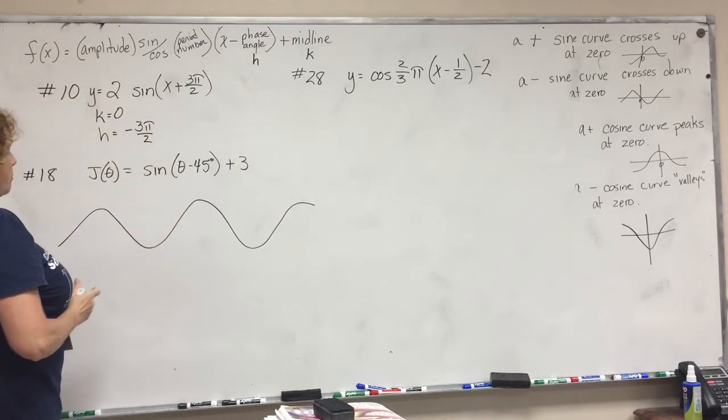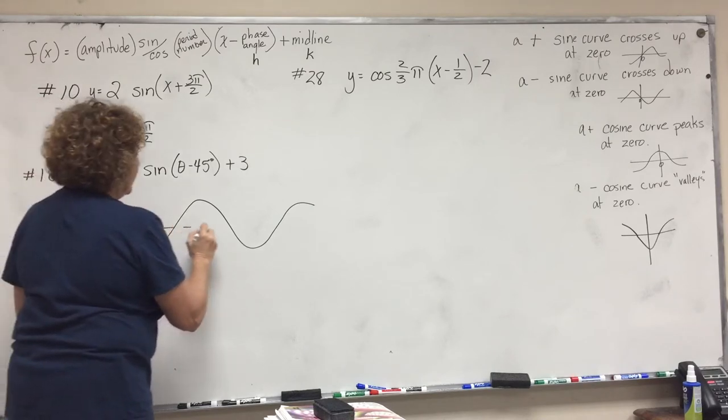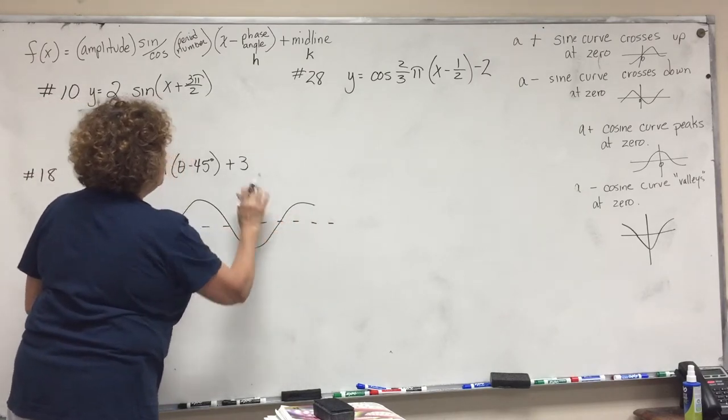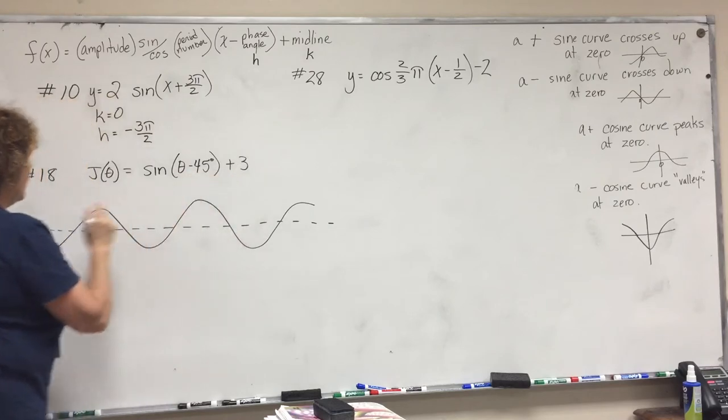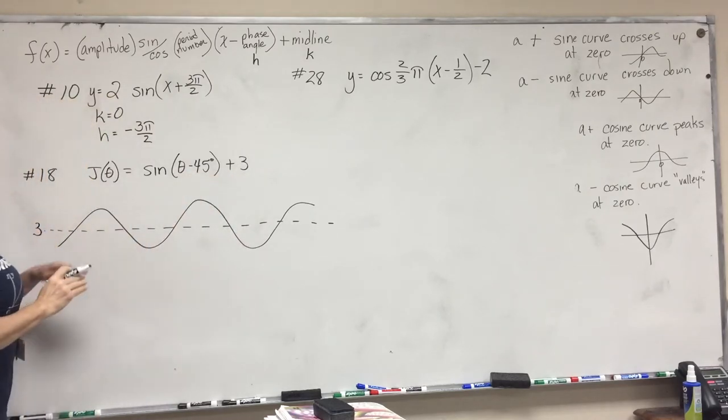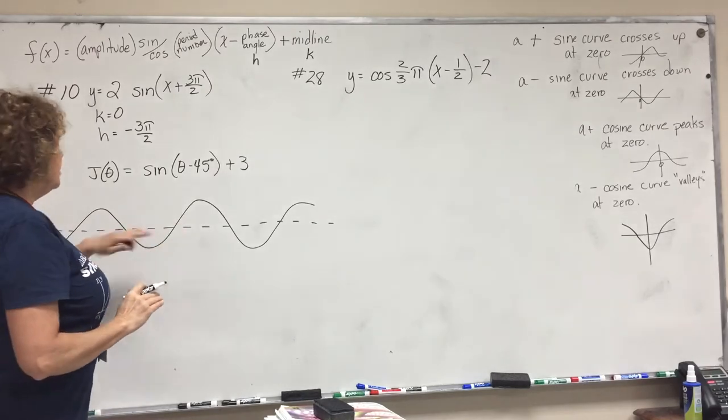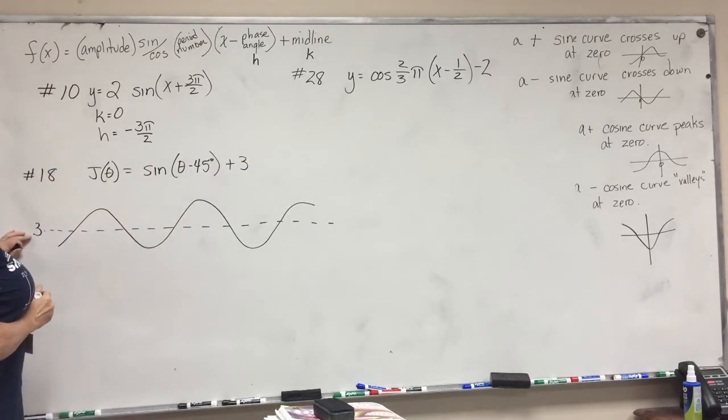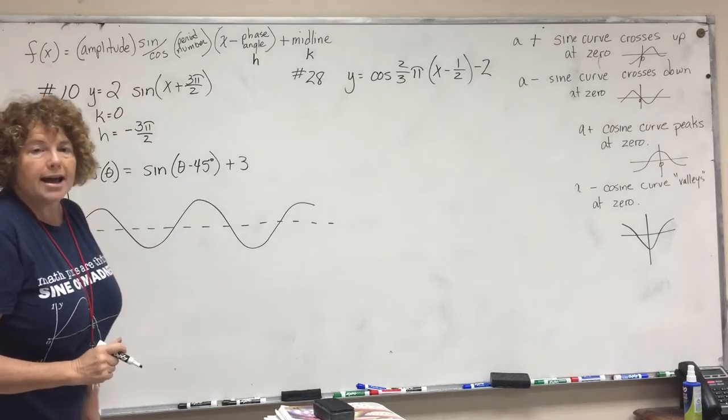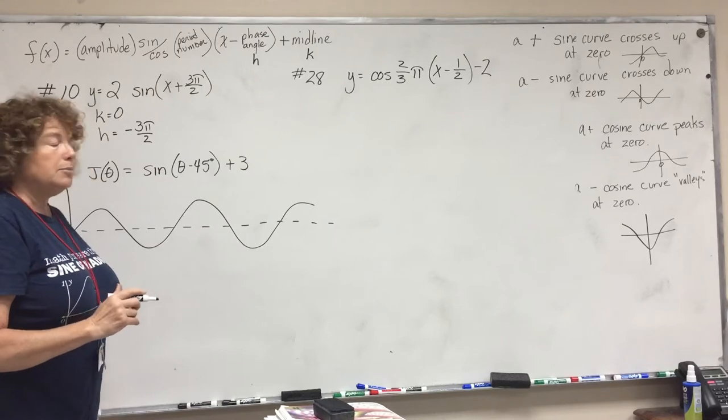Next, draw your midline. Your midline is 3 because it's been shifted up 3. Normally your midline is 0, but it's been shifted up 3, so just label that 3. And I'm going to draw a line this way—this is not necessarily the y-axis, but I just want to put labels on it.